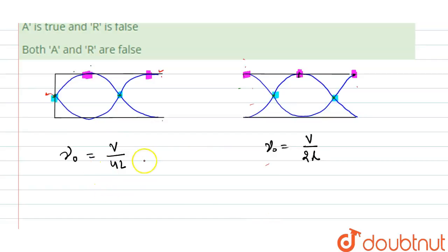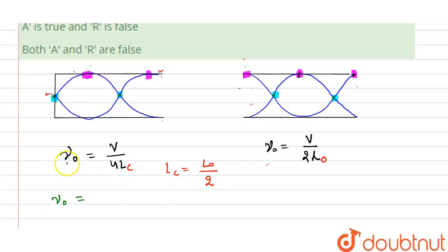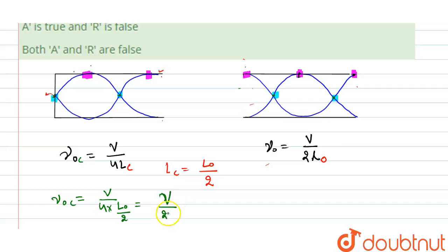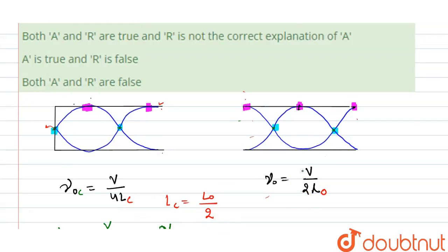Let us consider L_o as the length of the open organ pipe and L_c as the length of the closed organ pipe. The question states that the length of the closed organ pipe is half the length of the open organ pipe. Substituting: the fundamental frequency of the closed organ pipe is v divided by 4 times (L_o / 2), which equals v divided by 2L_o — equal to the fundamental frequency of the open organ pipe.